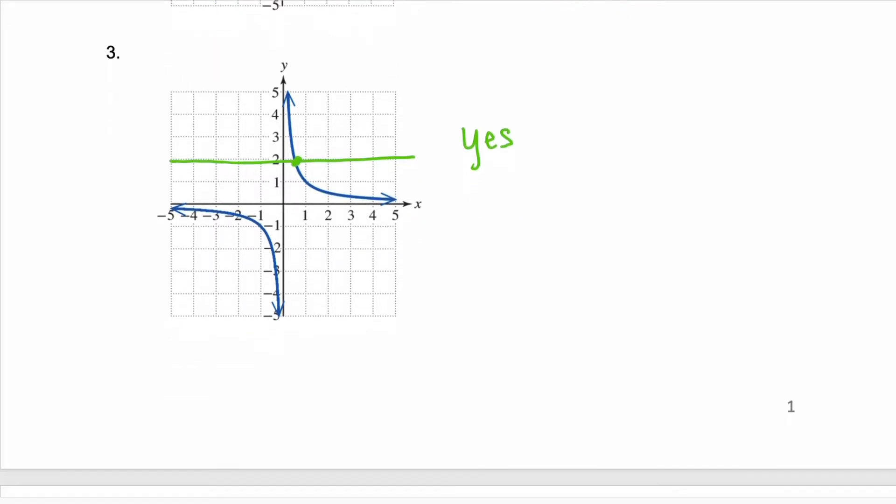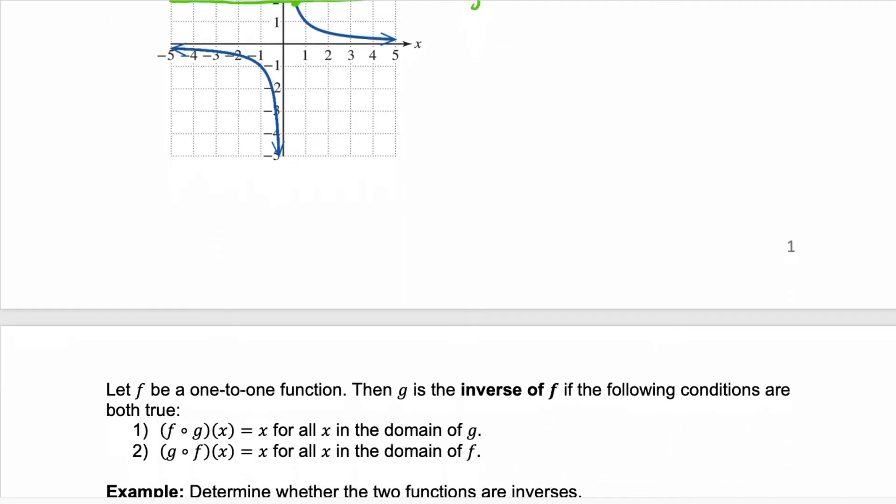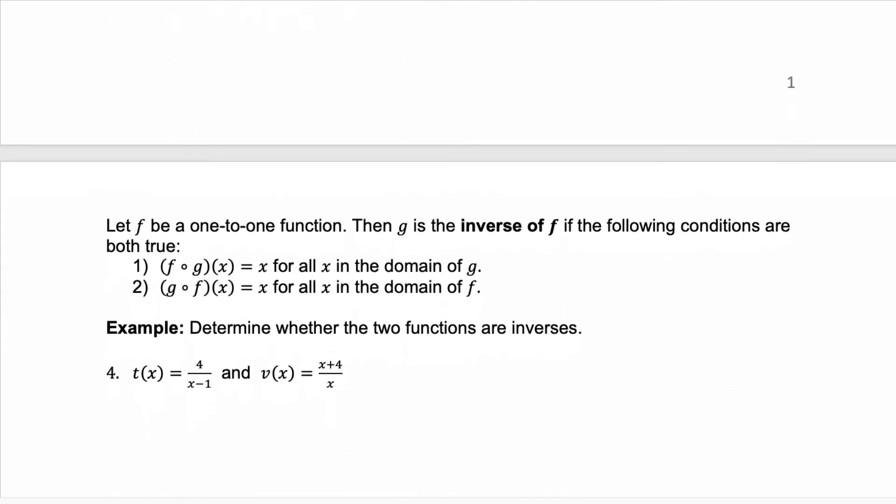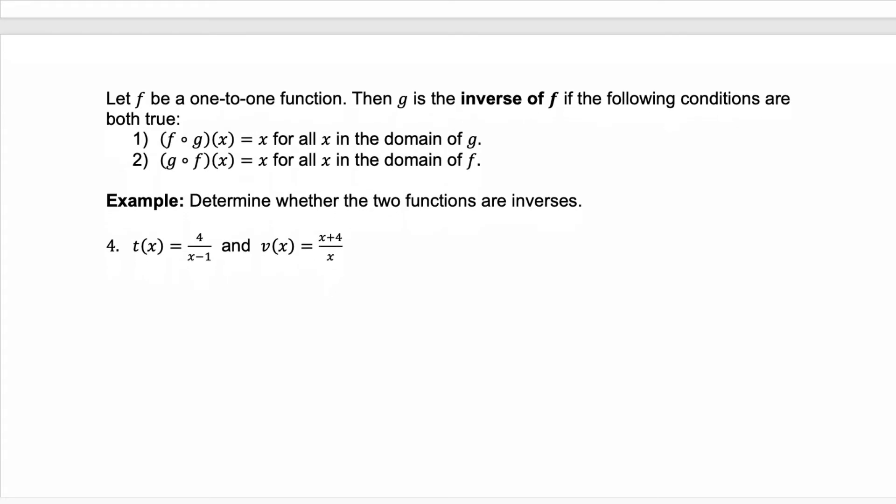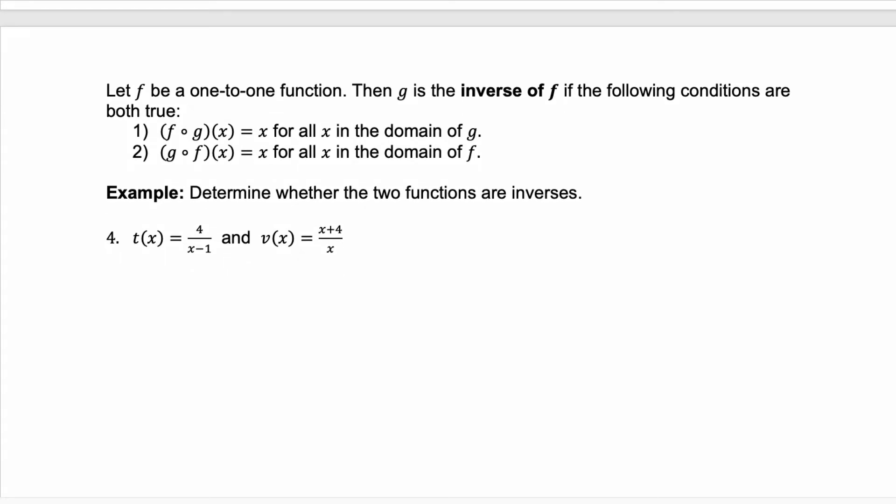So now that we know what one-to-one functions look like and how to find them, we're going to use that information to help us find inverses. So if f is a one-to-one function, then g can be the inverse of f.